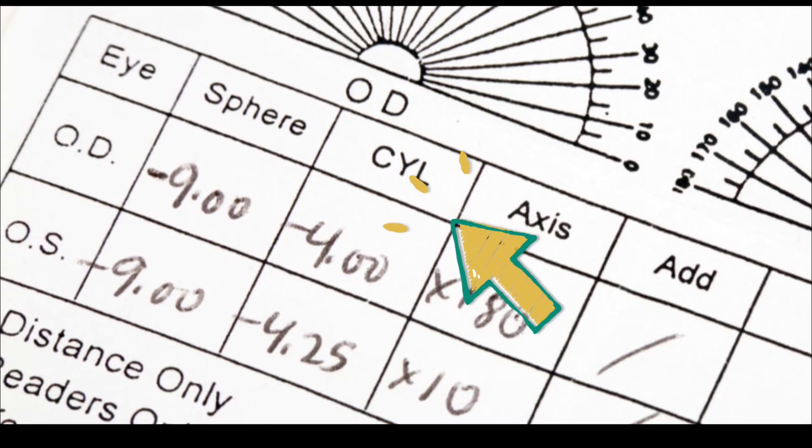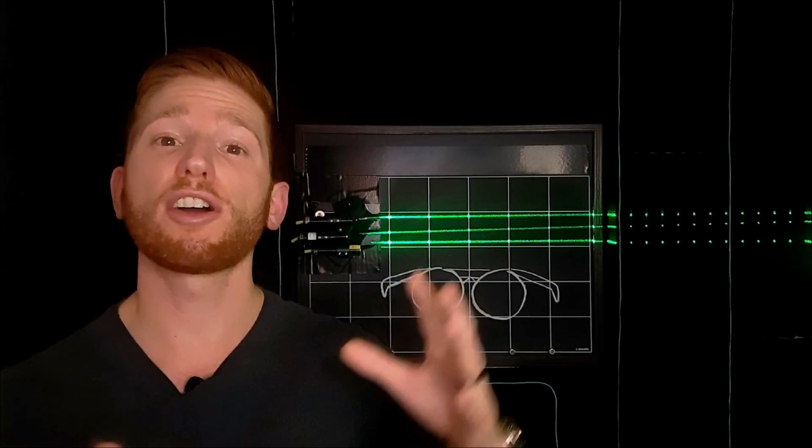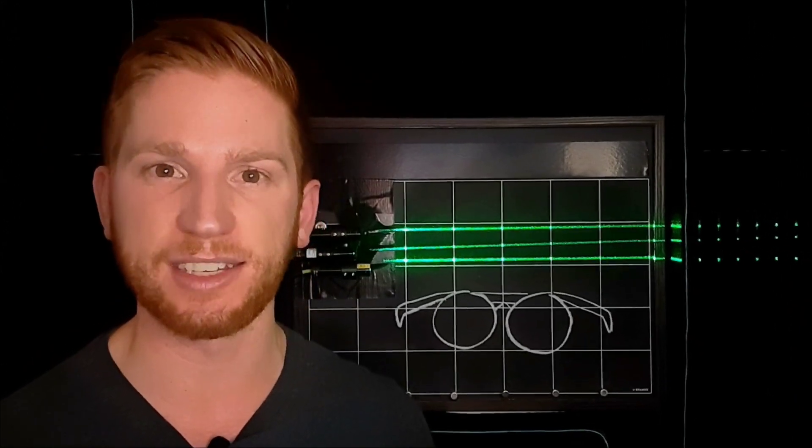If you have a CYL or cylinder number in your eye prescription, that means that you have astigmatism. CYL numbers with a larger magnitude, whether they're positive or negative, both mean that you have a more severe amount of astigmatism, with smaller magnitudes meaning that you have less astigmatism.